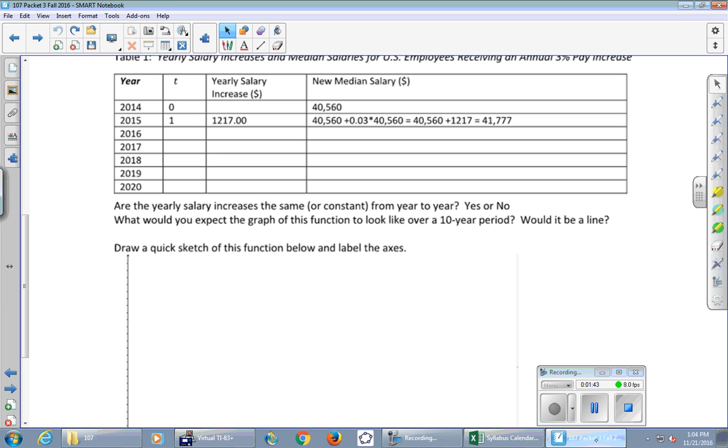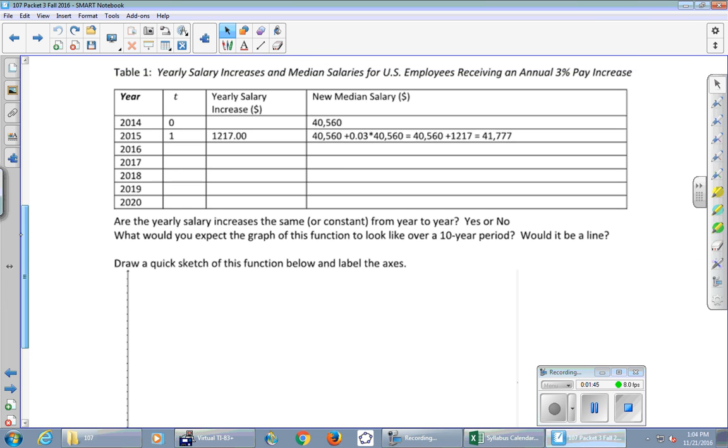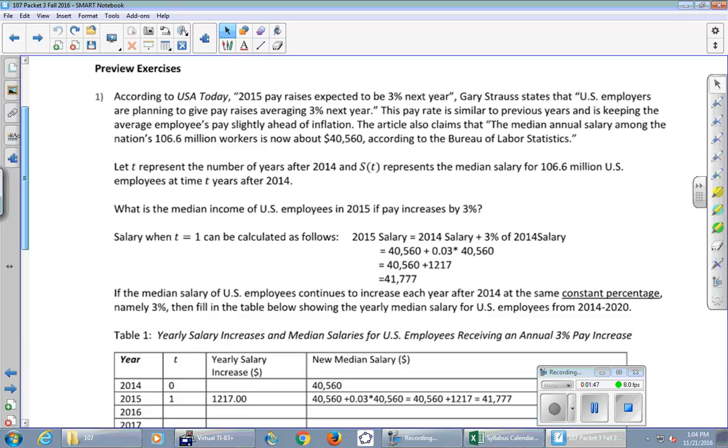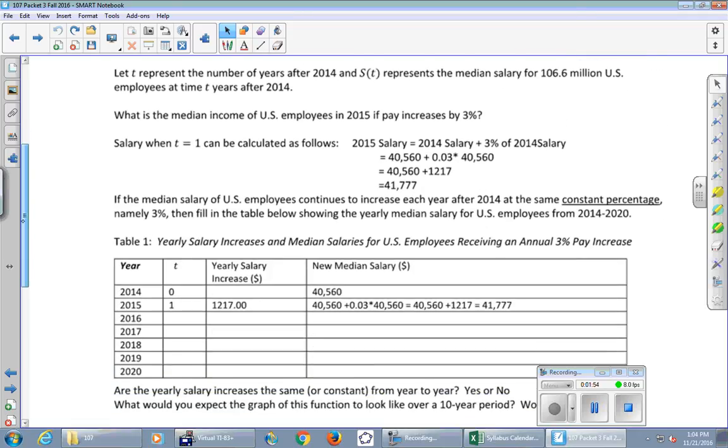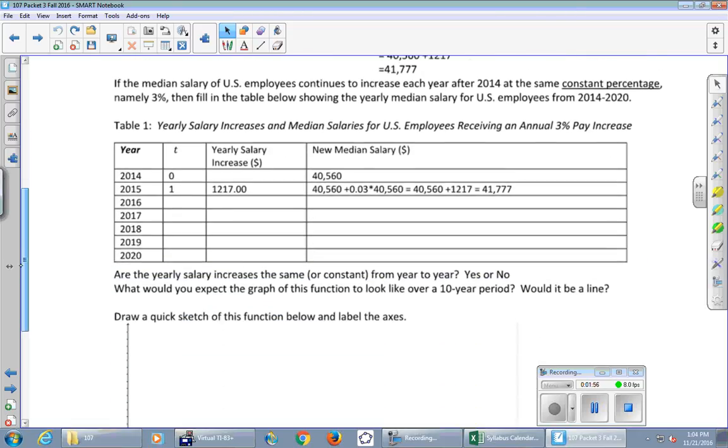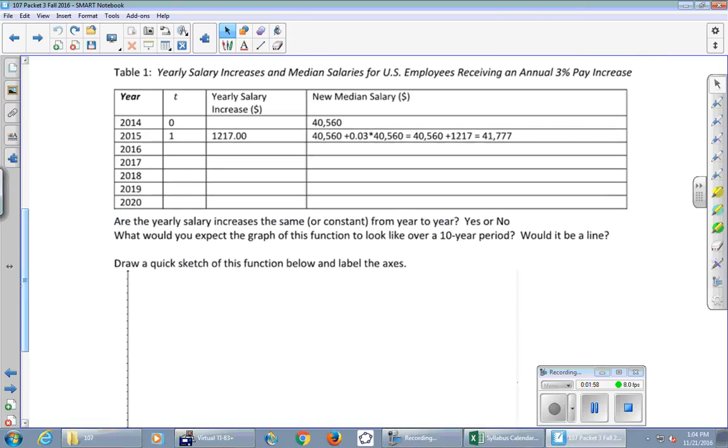Let's take a look at the new stuff here. So the basic idea with this particular problem is that we are going to be increasing. We're going to get a salary increase of three percent per year every single year. Let's do some calculations here. So if we start with a salary of forty thousand five sixty, we'd take three percent of that number. Turns out three percent of that number is twelve seventeen.